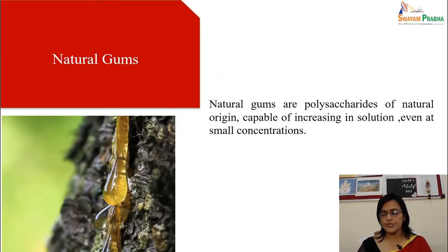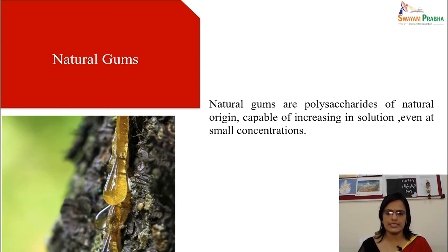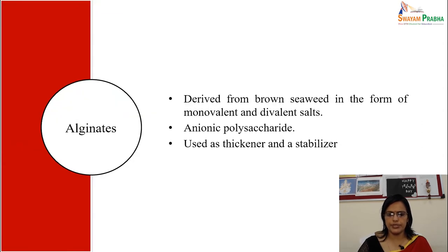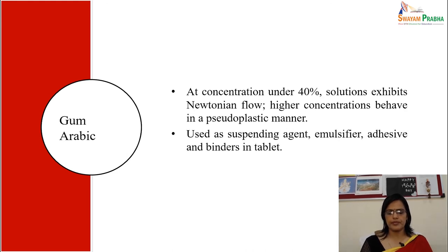Moving to natural gums from natural sources: natural gums are polysaccharides of natural origin capable of increasing viscosity in solution even at small concentrations. Alginates are derived from brown seaweed in the form of monovalent and divalent salts. Anionic polysaccharides are used as thickeners and stabilizers in cosmetic preparations.